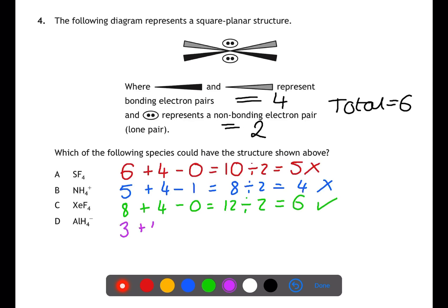For D, we have aluminium with three electrons plus four for the hydrogens minus the charge of minus one electron to give four electron pairs.